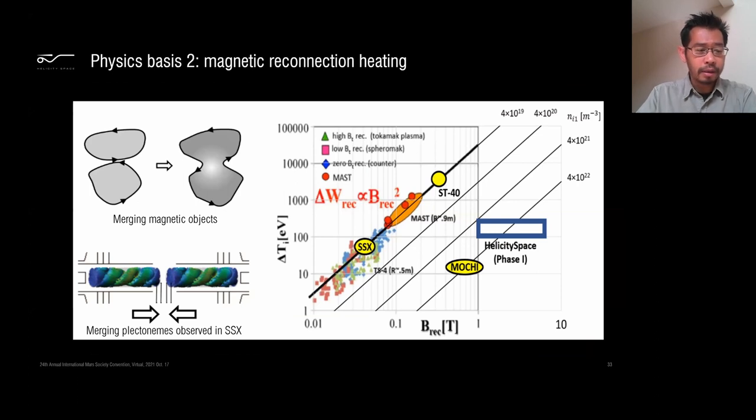The second physics basis is reconnection heating. If we merge multiple magnetic objects, the magnetic field lines can merge together and reconnect. And then some of the dissipated magnetic energy heats up the plasma. This was demonstrated around the world over decades using toruses, various types of toruses. And then recently with these plectonemic double helical fields merged together in the center. This plot shows the strength of the magnetic field and then the temperature that you would get out of it. You can start getting fusion temperatures, which is above a thousand electron volts, reasonably with modest magnetic field, at least at low densities. What we aim to do is to try and do this at high density.